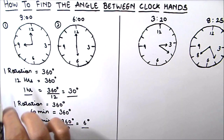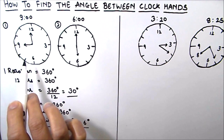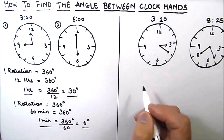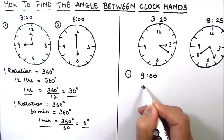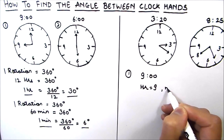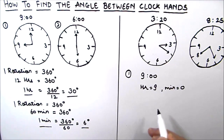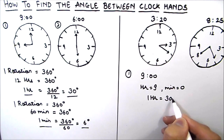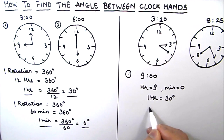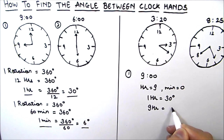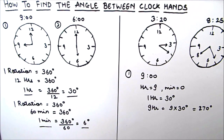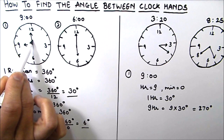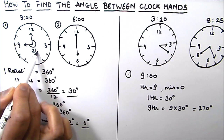Let's start with our first example where the time is 9 o'clock. That means hour is 9 and minute is 0. We know that in one hour the angle made is 30 degrees, so for 9 hours the angle made will be 9 times 30, which is equal to 270 degrees. So at 9 o'clock, the angle made is 270 degrees.